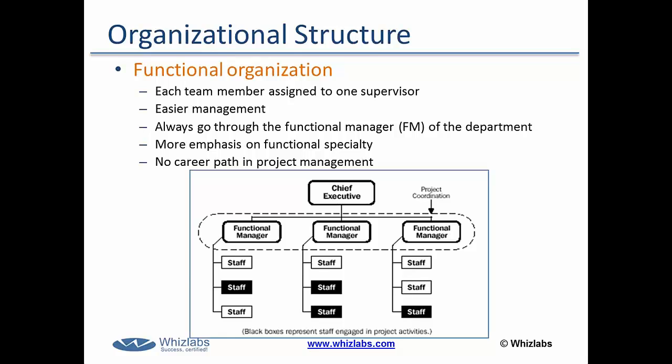A Functional Organization is mainly structured through various functional departments. As you can see in the diagram, we have various functional departments headed by Functional Managers. The Functional Managers report into the Chief Executive. In this type of organization, there is no direct role of a Project Manager. The Project Manager rather works like a Project Coordinator, and the projects are led by the Functional Managers.